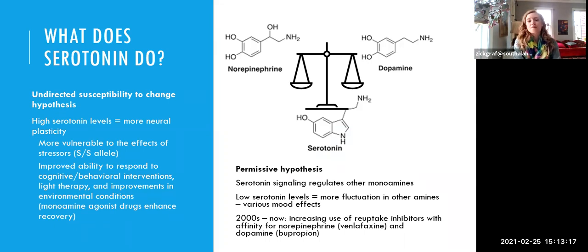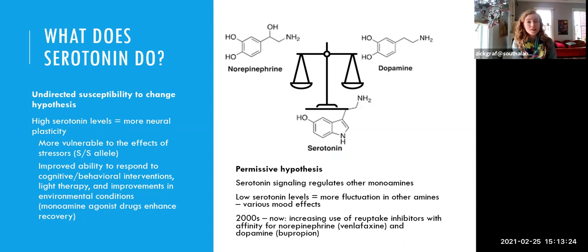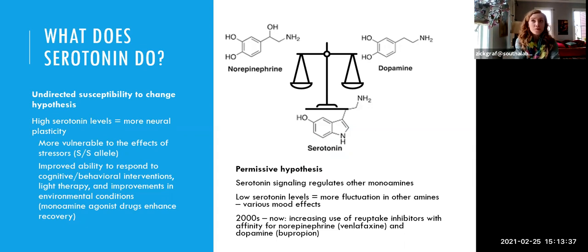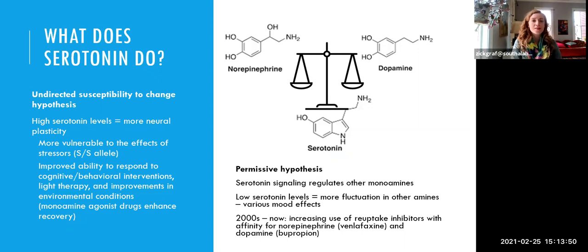The permissive hypothesis is that problems with serotonin signaling lead to downstream problems with norepinephrine and dopamine signaling. The other hypothesis is the undirected susceptibility to change hypothesis — that serotonin isn't simply good or bad and doesn't have a one-to-one relationship with mood. What it does have a relationship with is neuroplasticity: how good your brain is at learning from and reacting to the environment. Higher serotonin levels don't necessarily lead to better mood, but they do lead to neuroplasticity, which can have good or bad effects.